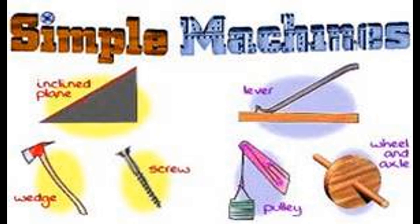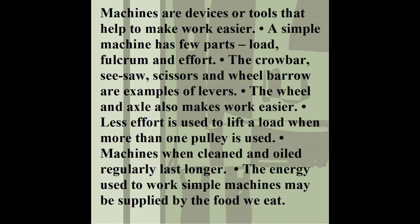Here's a picture showing the different simple machines — you have an inclined plane, you have the lever, you have the wedge, you have the screw, you have the pulley, and you have the wheel and axle. Simple machines is a topic that is very important to our everyday life because it makes work much easier for us. Machines are devices or tools that help to make work easier.